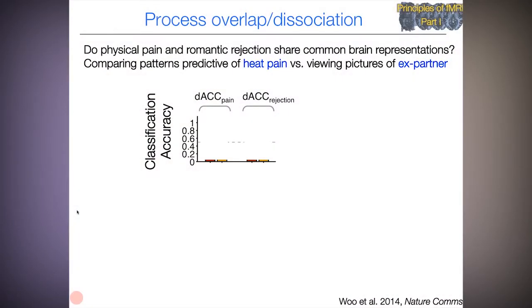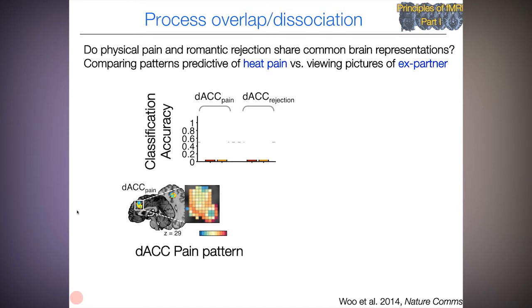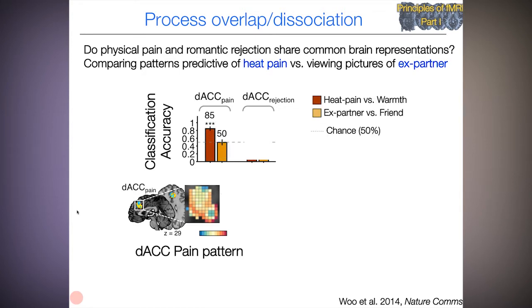Let's look at an example of this from a recent study from our lab. The issue was: do physical pain and romantic rejection share common brain representations, especially in the dorsal anterior cingulate? We compare patterns of activity — this is multivariate — predictive of heat pain versus patterns predictive of viewing pictures of an ex-partner, relative to their respective control conditions. We can identify a pattern within the anterior cingulate where the response overall responds to physical pain more than to warmth, its control condition, but there's no additional response to the ex-partner versus the friend. That's one half of a double dissociation or separate modifiability process.